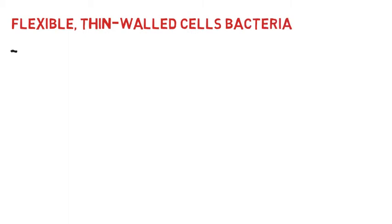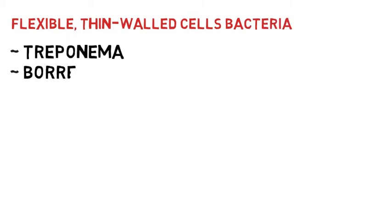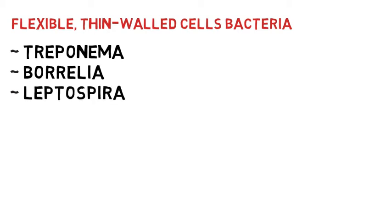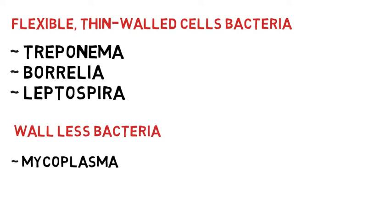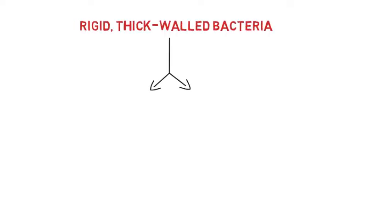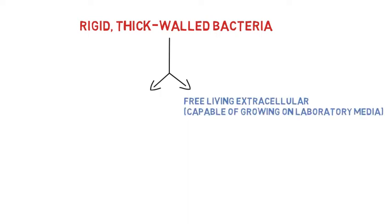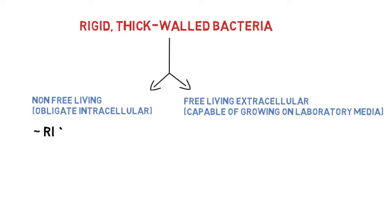In the thin or flexible walled cells, Treponema, Borrelia, and Leptospira are included, while Mycoplasma is a wall-less bacteria. Now coming to the thick-walled cells, they are subdivided into free-living bacteria, which are capable of growing on laboratory medium, and non-free-living bacteria, which can only grow within human or animal cells and not on laboratory medium. The non-free-living bacterial class includes Rickettsia and Chlamydia.